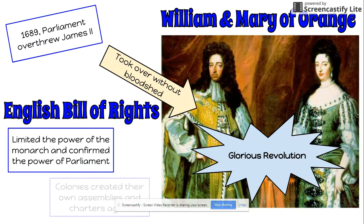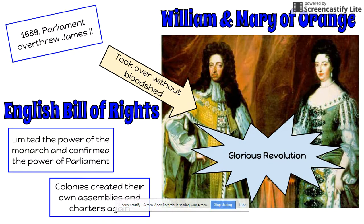For the colonists, what did this mean? The colonies saw this as an opportunity to create their own assemblies and charters again, since they had been restricted under James II. Now with a new king and queen restricted by the English Bill of Rights, the colonists saw themselves as Englishmen under that Bill of Rights. They felt it was within their right to hold town meetings and have their local courts once again.